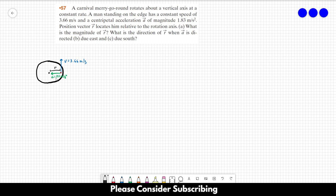So the first thing that we have to find is the magnitude of R and we know that the centripetal acceleration is equal to V squared over R. So we just have to isolate R which is equal to V squared over A. So it is 3.66 squared divided by 1.83, and this gives us 7.32 meters. So that's the answer of letter A. This distance here is 7.32 meters.